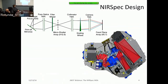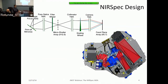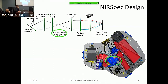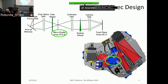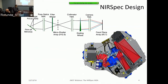Here's a quick overview of the NIRSpec design, following the light path through the system. Light goes from the telescope mirror through the pickoff mirror and into the instrument. It passes through a set of optics including the fore optics, which pass the light through a filter wheel. Different settings of the filter wheel in combination with the grating wheel provide the desired spectral coverage and resolution.